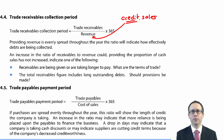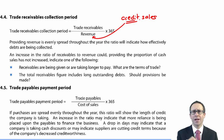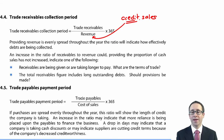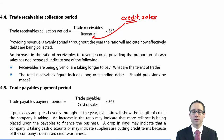Once you've worked out your receivable days, you can see if there has been an increase or a decrease, allowing you to assess how effectively debts are being collected. An increase in the number of days shows a lack of efficiency and brings increased risk of irrecoverable debts, which reduces profitability. A reduction in days is an improvement in efficiency.